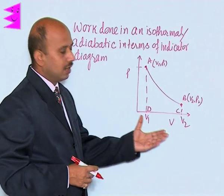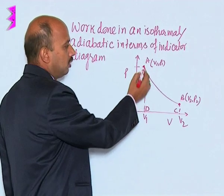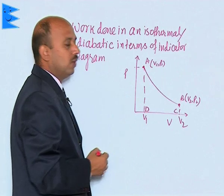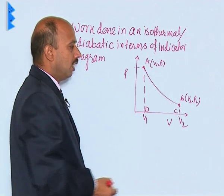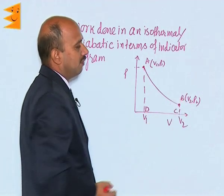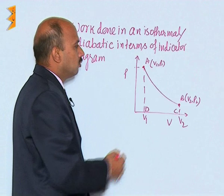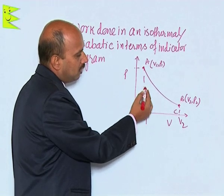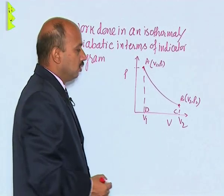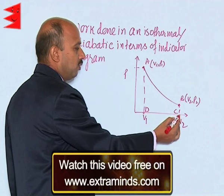On the PV diagram, at point A the parameters are V1 and P1, and at point B the parameters are V2 and P2. We now need to calculate the work done using this graph, as the volume changes from V1 to V2.